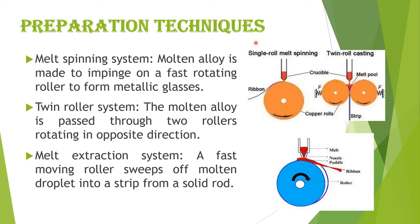Preparation techniques include the melt spinning system, where molten alloy is made to impinge on a fast-rotating roller to form metallic glasses; the twin roller system, where molten alloy is passed through two rollers rotating in opposite directions; and the melt extraction system, where a fast-moving roller sweeps molten droplets into a strip from a solid rod.